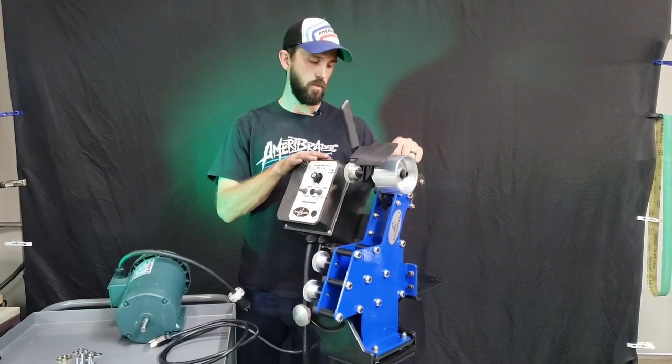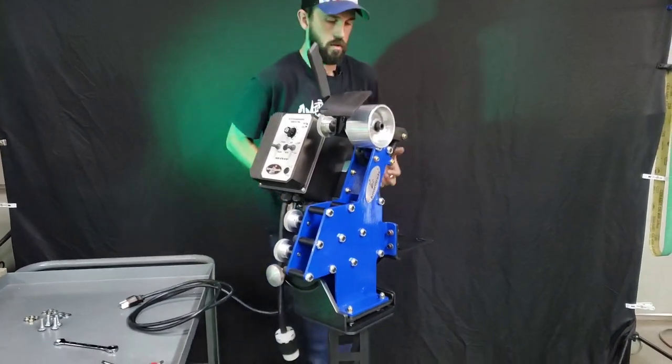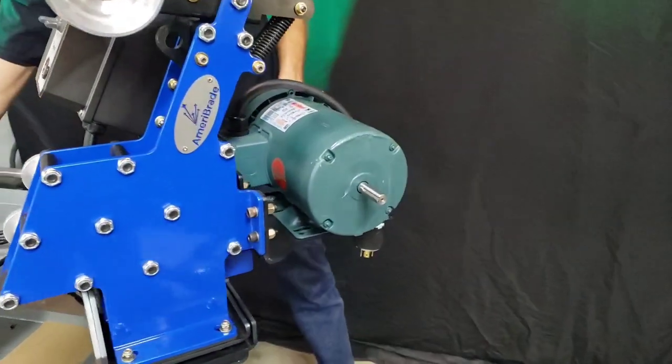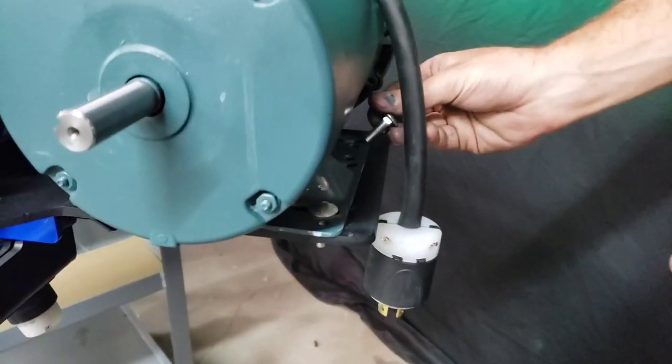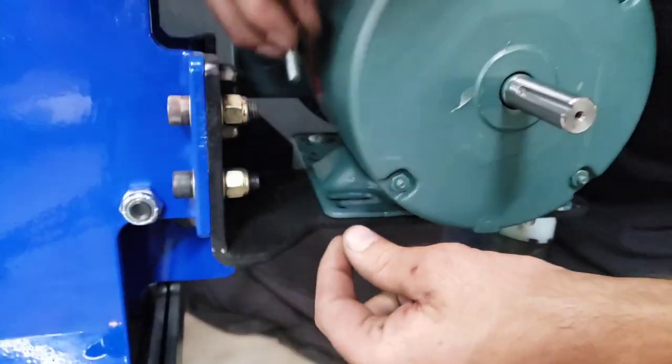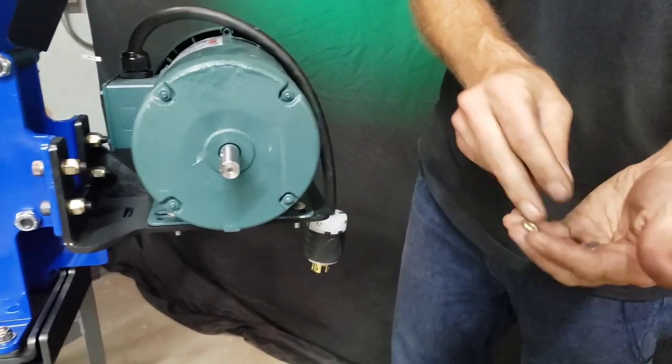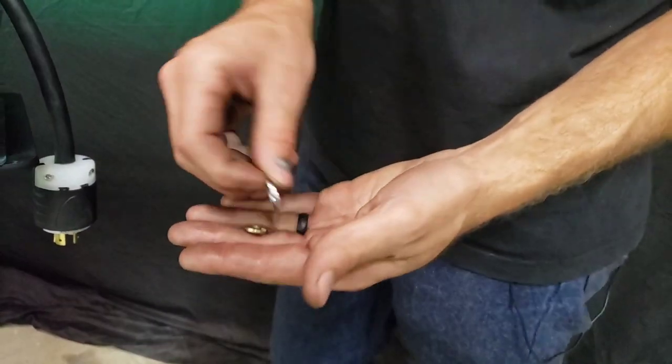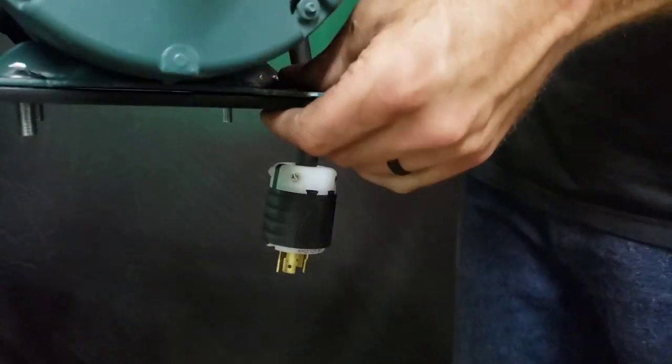Alright, now that you've got your VFD mounted up, we can put the motor on and get it aligned. Set your motor up there. Drop the four carriage bolts in the four corners going from top to bottom. And use a flat washer and a lock washer on each one. Flat washer goes on first, followed by the lock washer, followed by the nut.